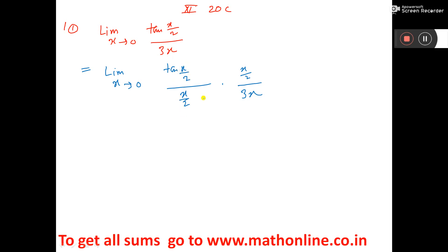So I divide x by 2, multiply x by 2. So nothing is taken. But I can cut this x with x. So it is 1 by 2 into 1 by 3, which equals 1 by 6.